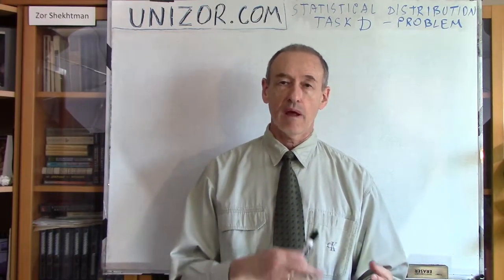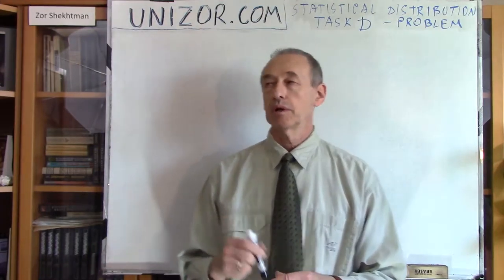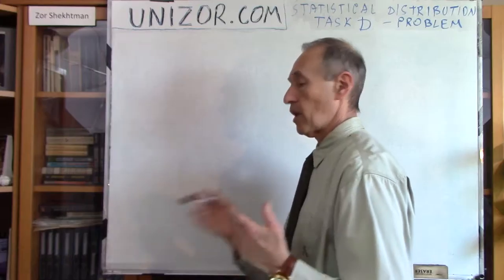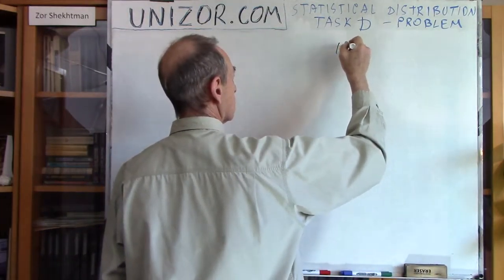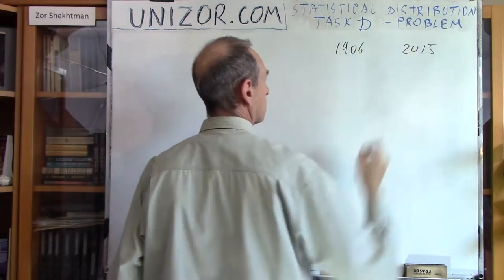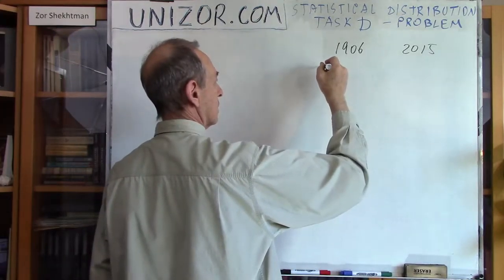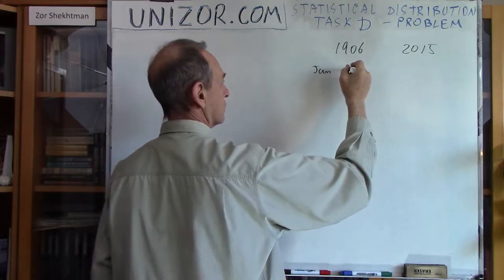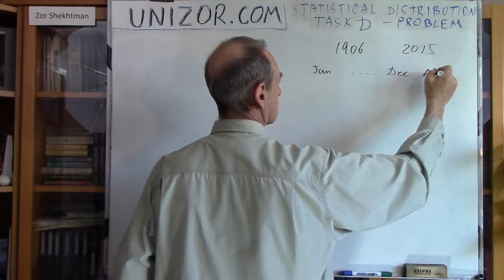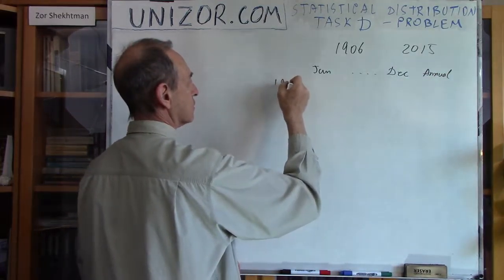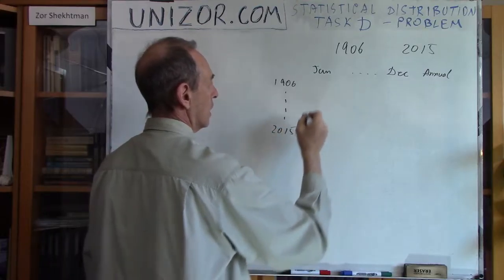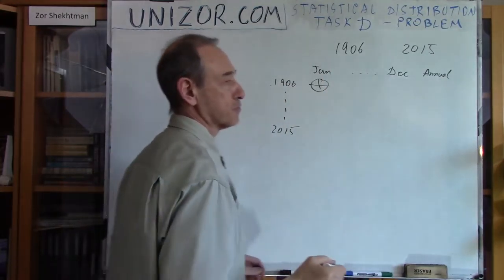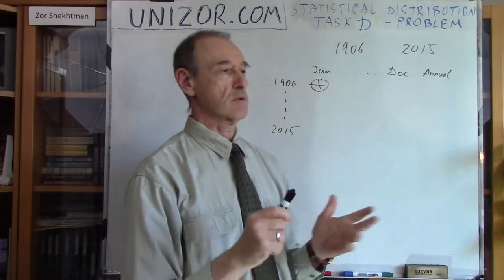What's given and what we have to obtain? What's given is some data which has been obtained throughout the last century. I took the data from 1906 to 2015, and the data basically contain the level of precipitation in New York during the months of January, February, etc., through December, and annualized for each year starting from 1906 all the way to 2015. I believe it's in inches — doesn't really matter, some number.